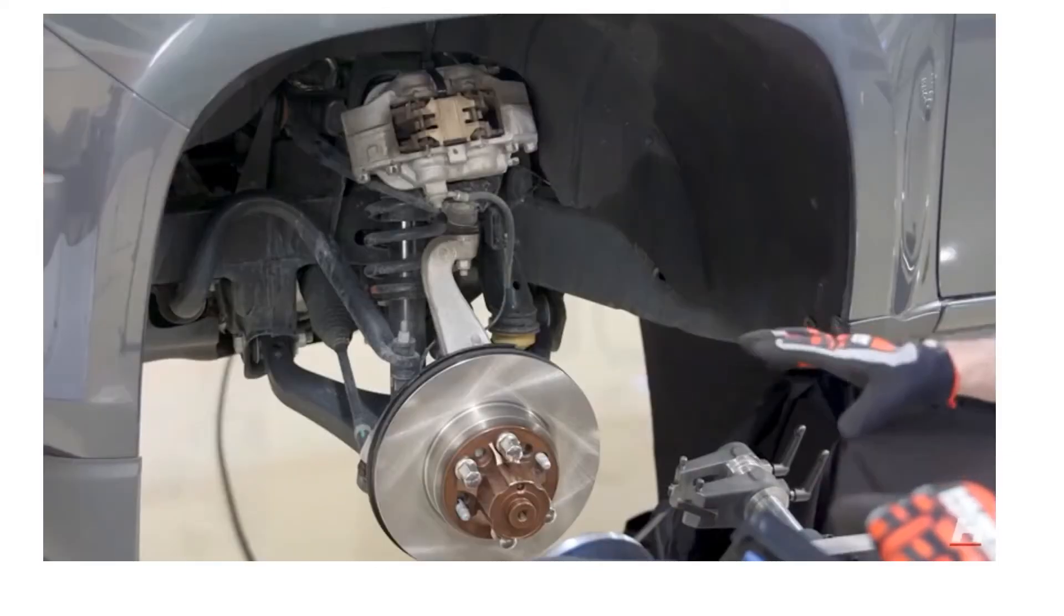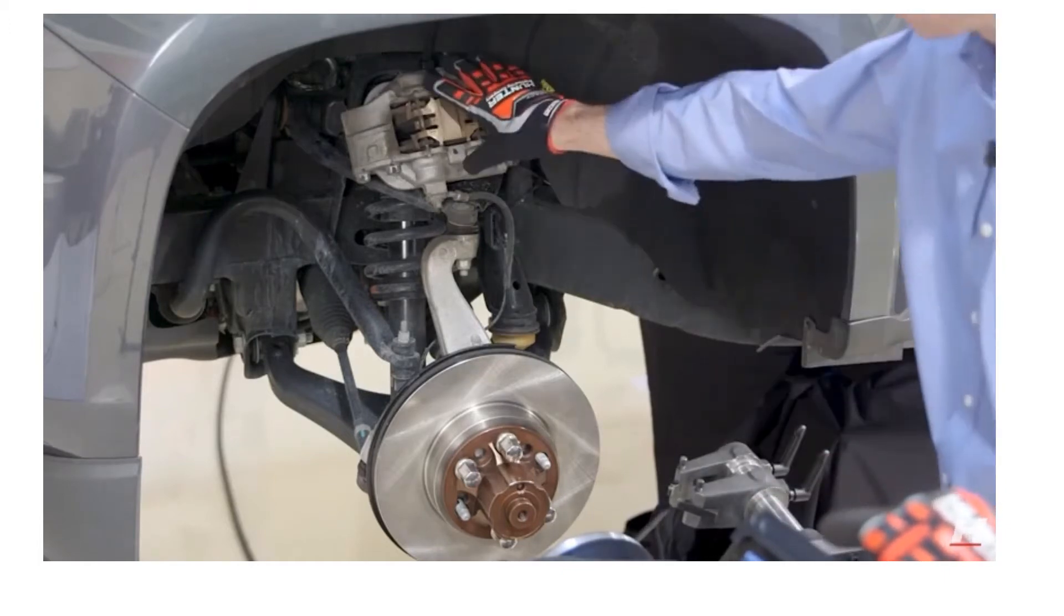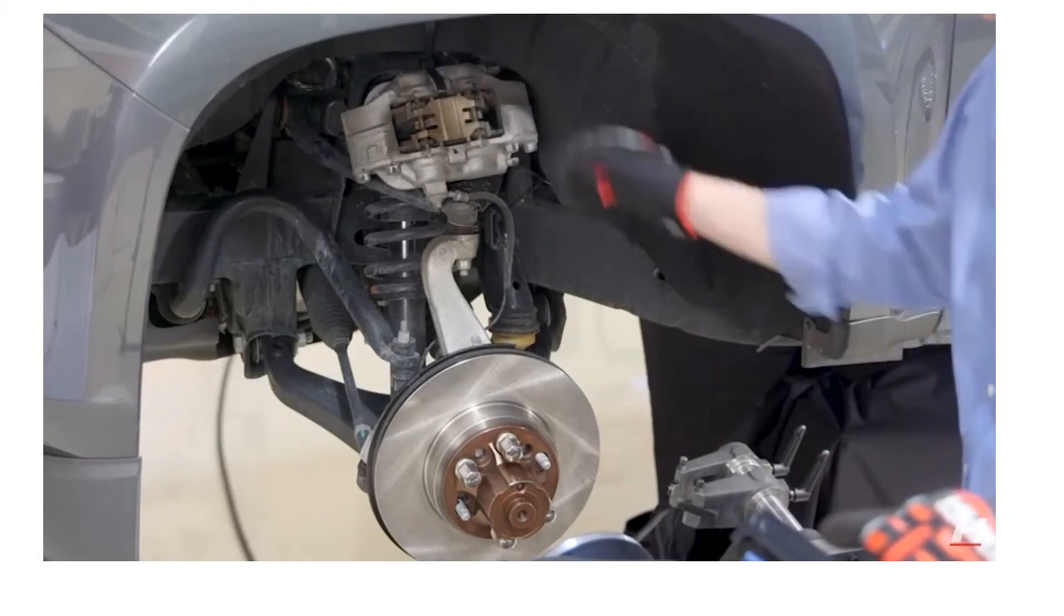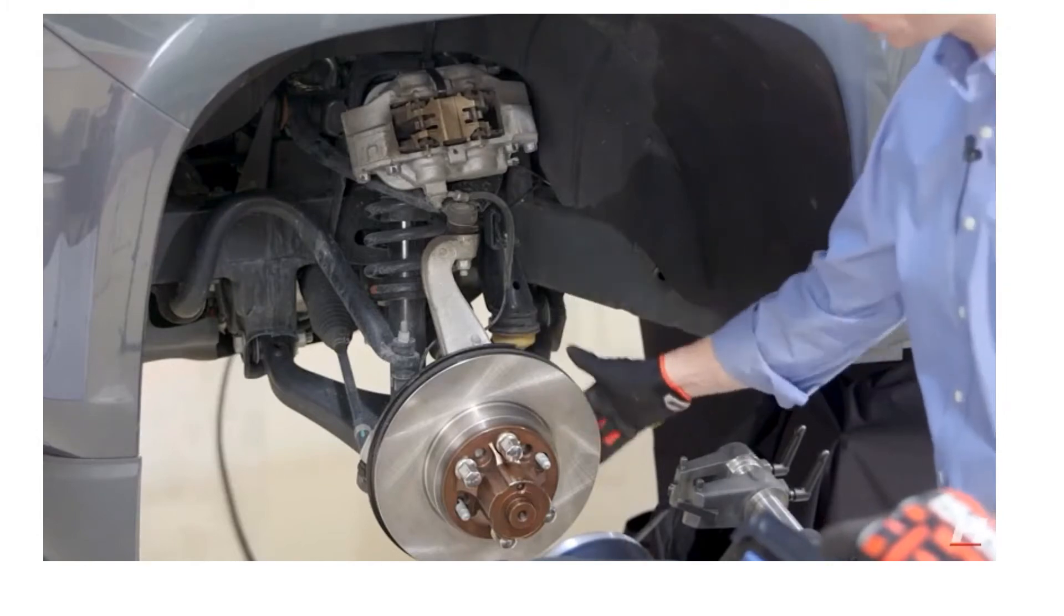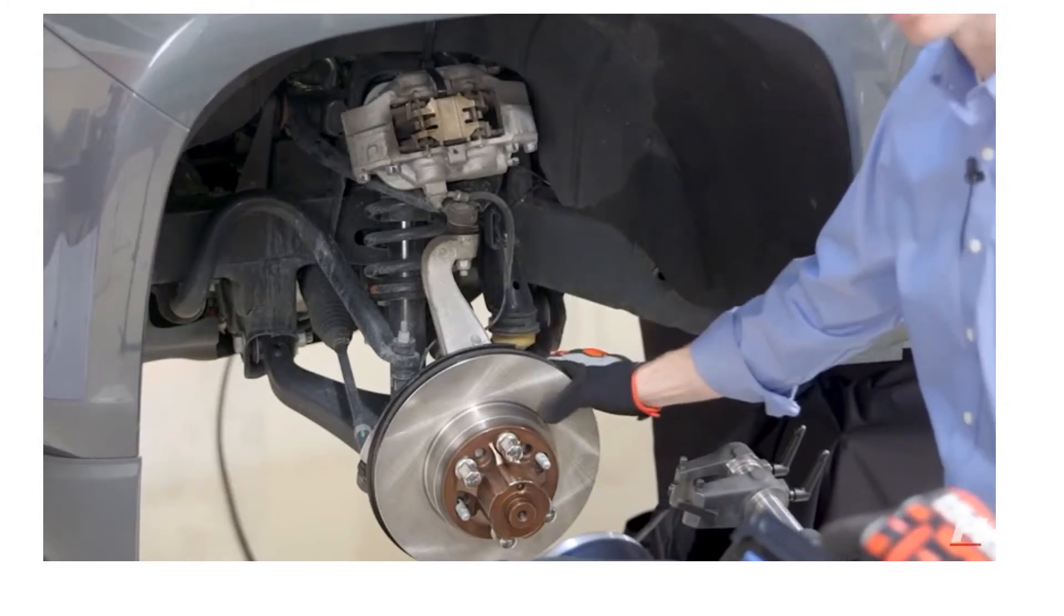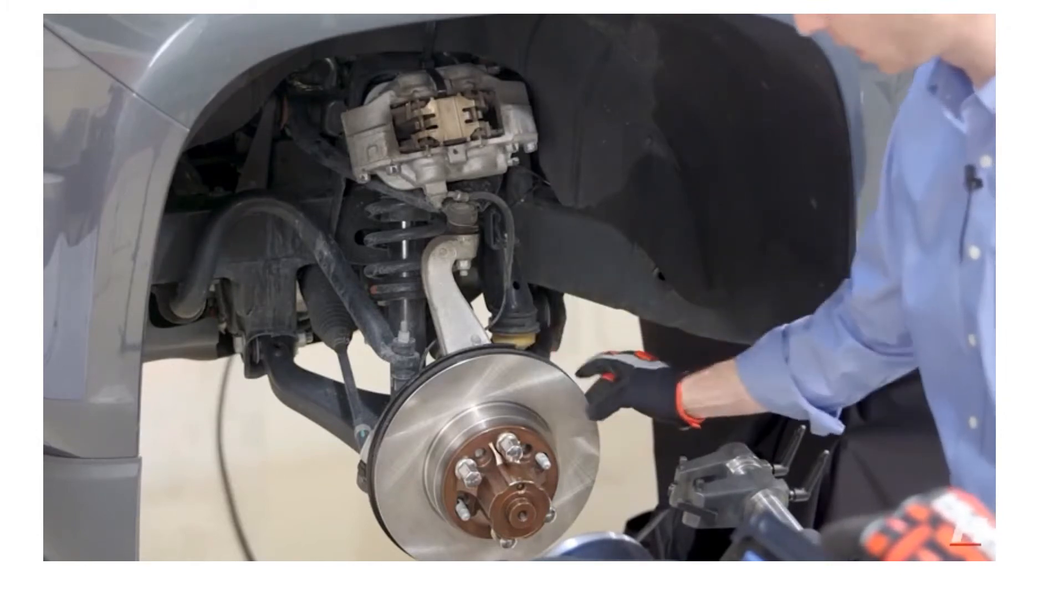Okay, so now we're ready to mount the lathe onto the vehicle. Notice that the caliper is out of the way and it's hung up so I have clearance. Pulling the caliper off gives me a nice access point to get the cutting heads in to actually make the cut.